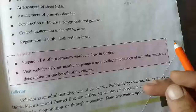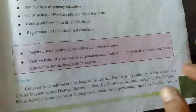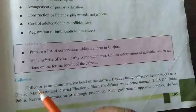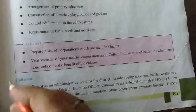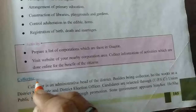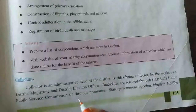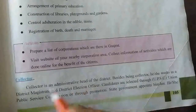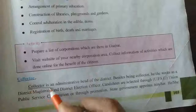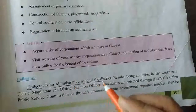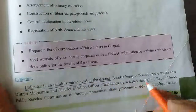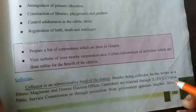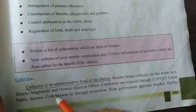We also need to prepare a list of all the corporations in Gujarat. Now, the collector — for example, the district collector of Valsad district. The collector is the administrative head of the district, responsible for all administrative work of the entire district. Besides being a collector, he or she also works as a district magistrate.